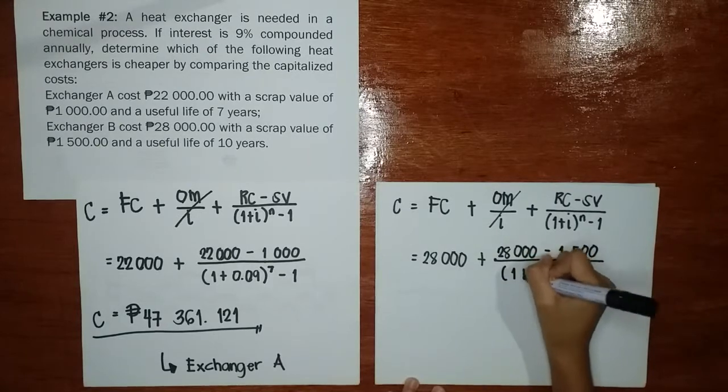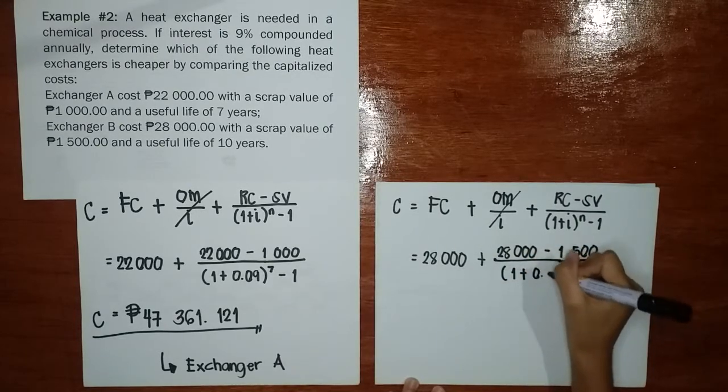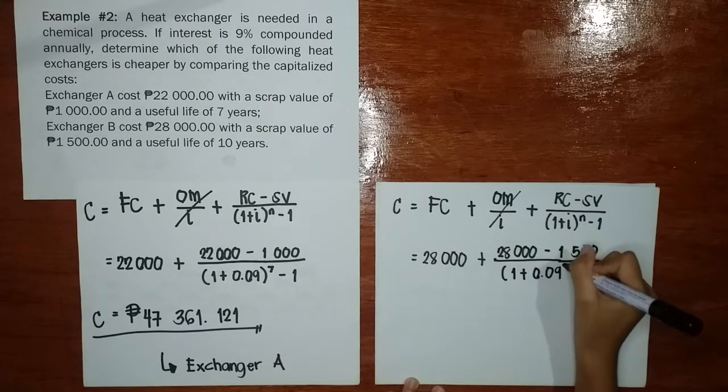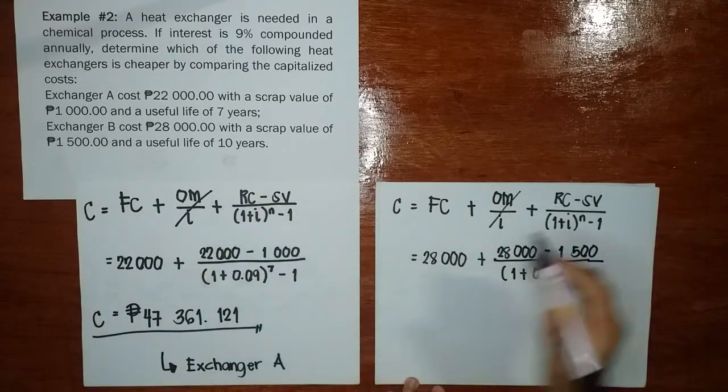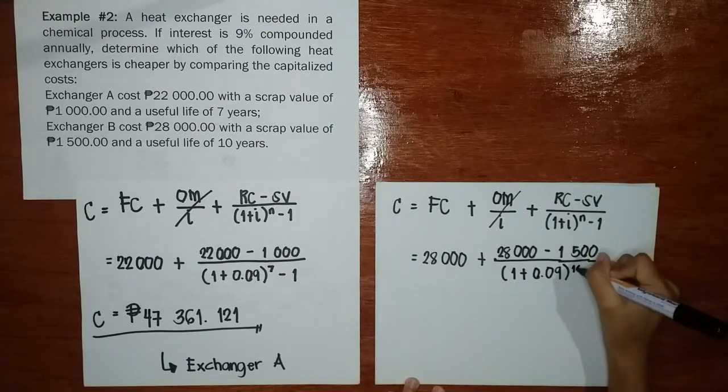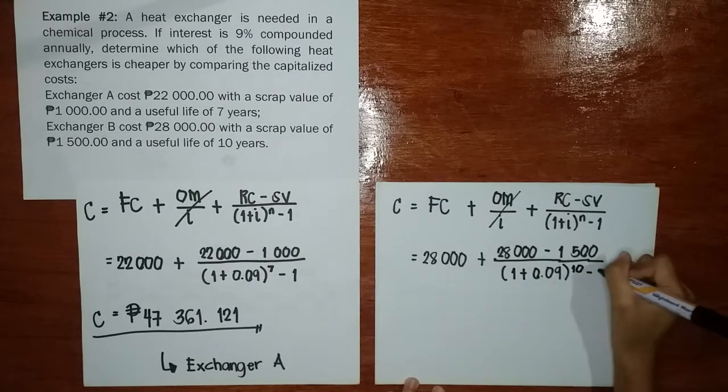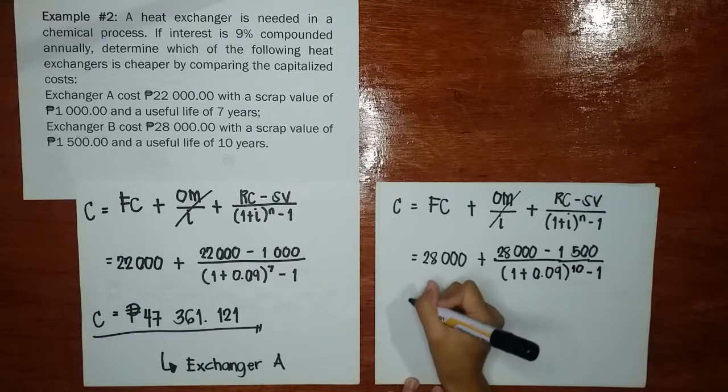Divide 1 plus 9% pa rin. Pero nagbago na ang kanyang useful life. Hindi na 7 years. You have now 10 years. So medyo matagal siya pesa kay A minus 1.